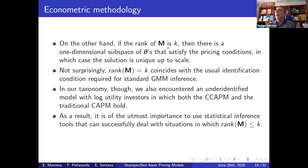If the rank is k rather than k plus one, then there will be a one-dimensional subspace of thetas that will satisfy the solution. This is really the case in which we say the moment conditions are satisfied, but they will be satisfied up to scale because I can always multiply theta by any real number without affecting the moment conditions. This is the usual identification condition in a standard GMM inference.